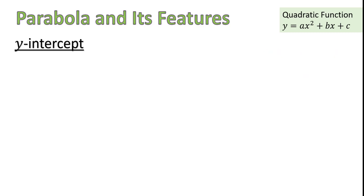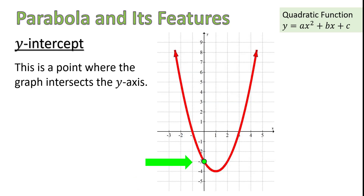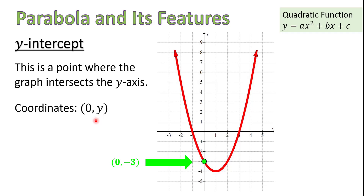The next important feature of a parabola is the y-intercept. The y-intercept is the point where the parabola crosses the y-axis — so remember: y-intercept is always on the y-axis. Since the y-intercept is a point, we describe it by its coordinates. In this example, the coordinates of the y-intercept are (0, negative 3). It's important to note that any point on the y-axis will always have x-coordinate 0. So the y-intercept will always have the x-coordinate 0, giving us a general form of (0, some number) — the number where the parabola crosses the y-axis.